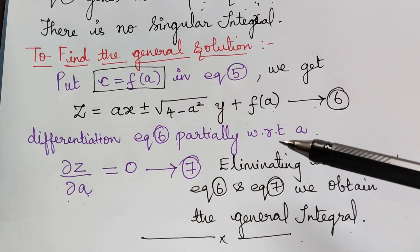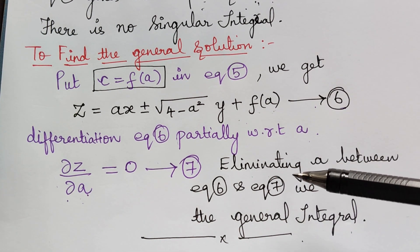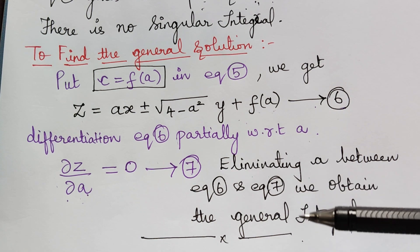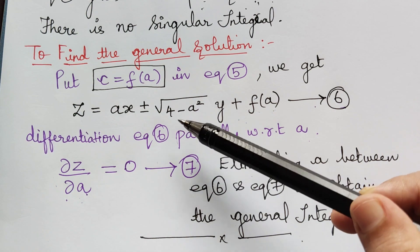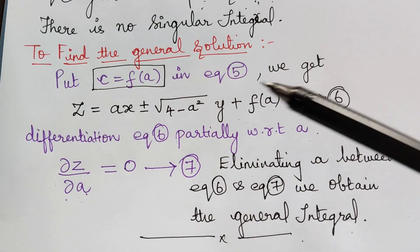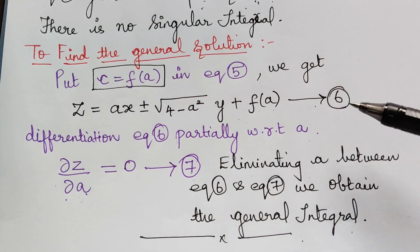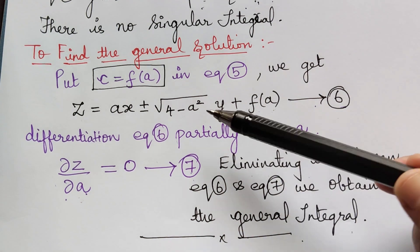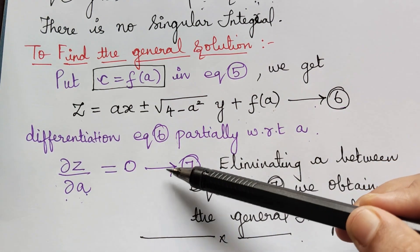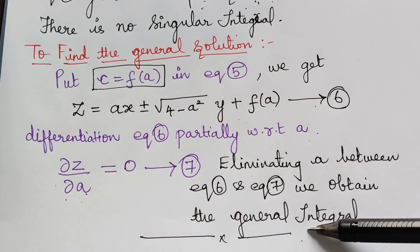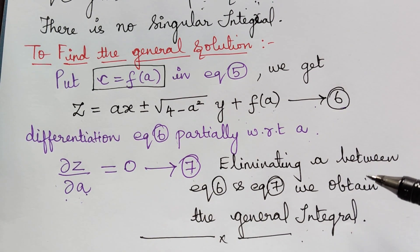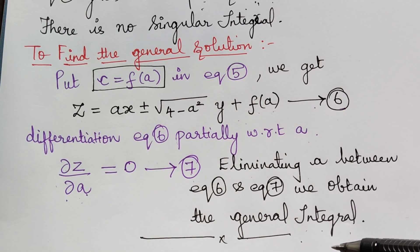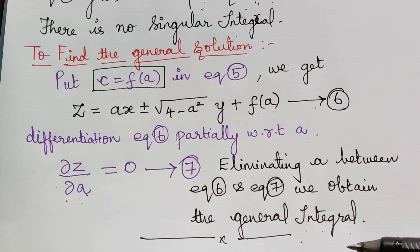The problem is complete only if you find the complete solution and the general solution as well. Because we had a inside the square root, we simply showed the method of finding the general solution by eliminating a between equations 6 and 7. If we are able to do it easily, we can show it after simplifying. You will definitely understand this concept better when you solve more problems on this topic in the following lectures. Kindly follow the upcoming lectures on this topic. Thank you.